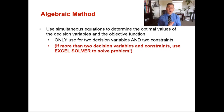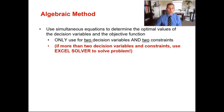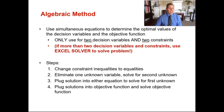The algebraic method can be used when you've got two decision variables and two constraints, and it will help us solve for what is our maximum profit and what exact number our decision variables should be. Our steps in doing the algebraic method: step one, change constraint inequalities to equalities. You're going to take that less-than-or-equal-to and make it equal to.